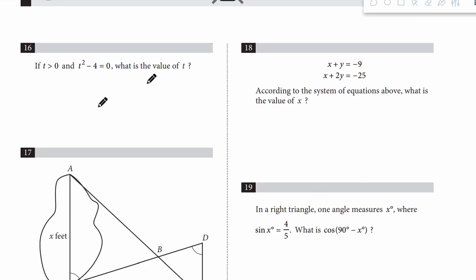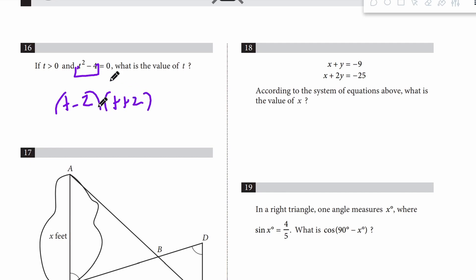Number 16: what is the value of t? We factor this as a difference of squares: t minus 2 times t plus 2. It wants the t that is greater than 0, so t equals 2.